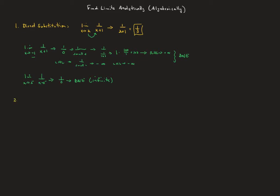The second strategy applies when direct substitution leads to 0 over 0. We call this indeterminate — it means we simply don't know. The limit might not exist, or it might exist but we don't know its value yet. We have to do something clever to resolve it, and one clever thing is to factor and cancel.